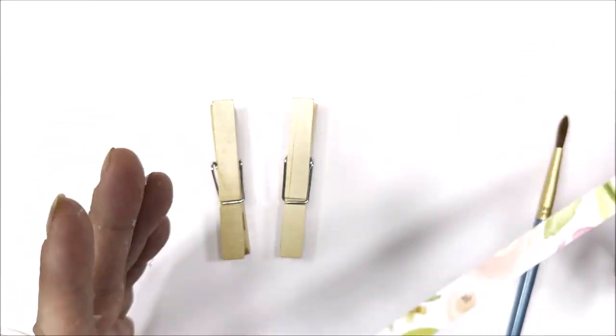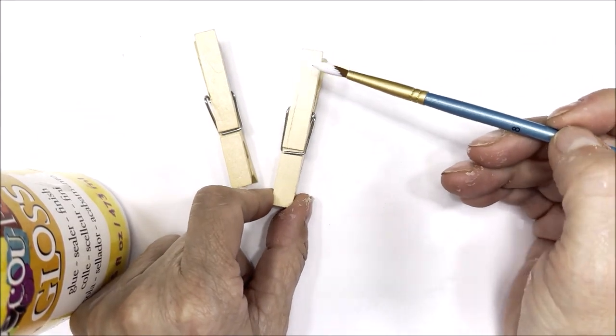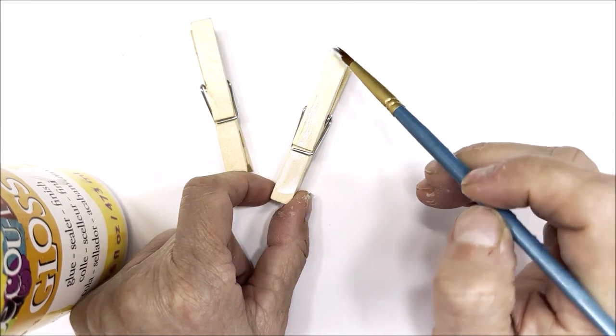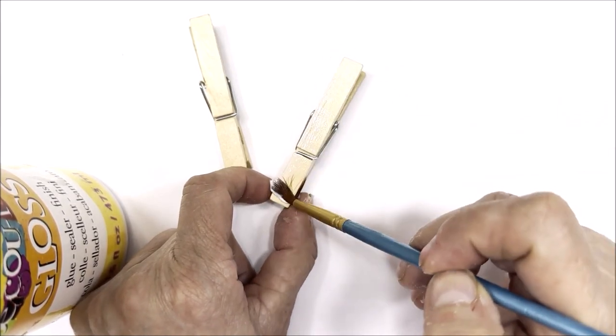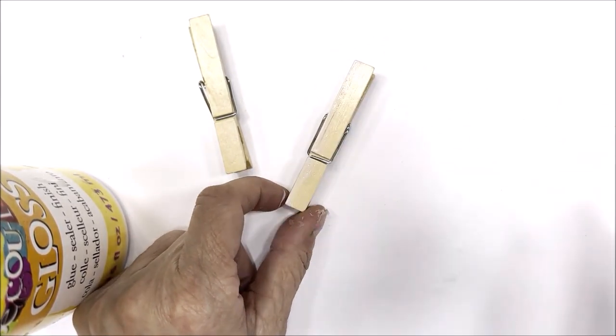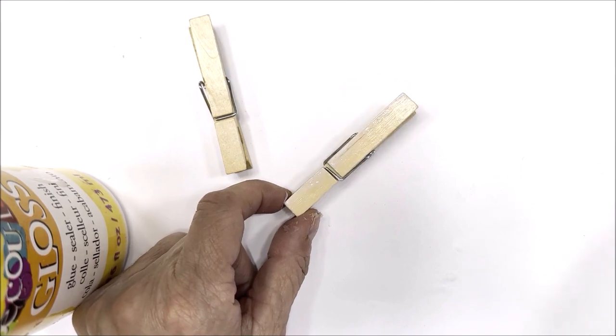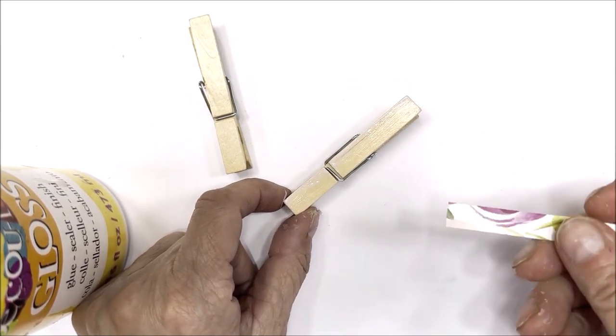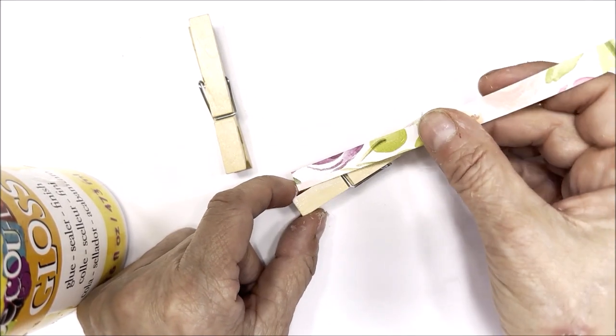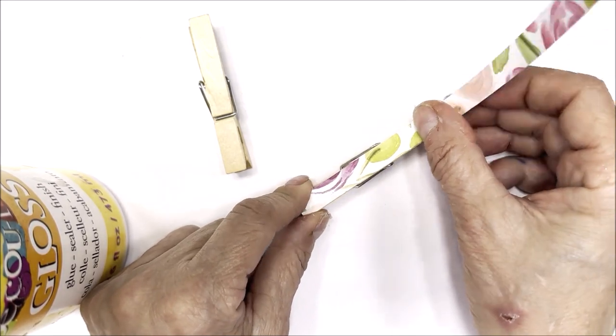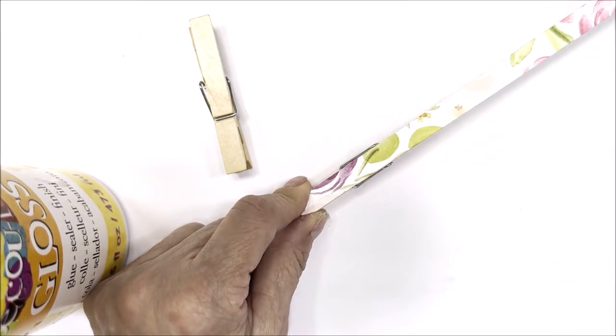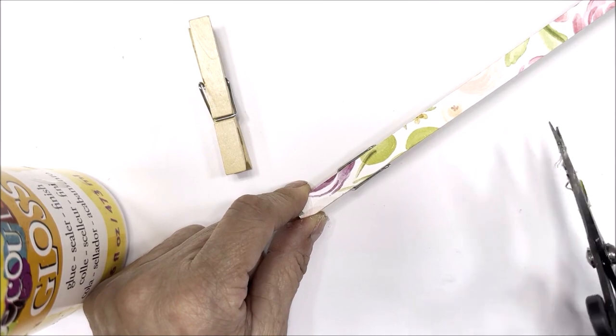You're going to use the decoupage medium to put on top of your clothespin. You don't want too much and you don't want too little. As you'll see in just a moment, I actually did not have enough on there. When I put this into place and then trimmed it up to size, it simply came up.